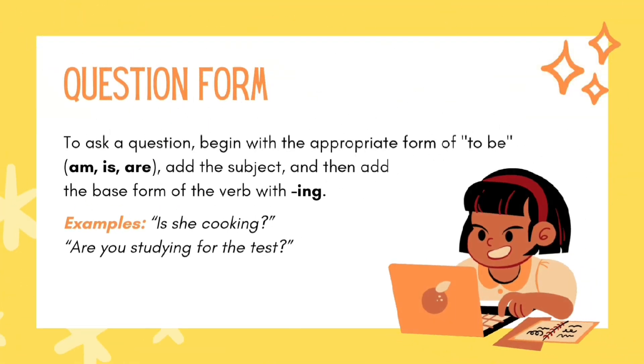Question form: To ask a question, begin with the appropriate form of to be — am, is, are — then add the subject, and then add the base form of the verb with -ing. Examples: Is she cooking? Are you studying for the test?